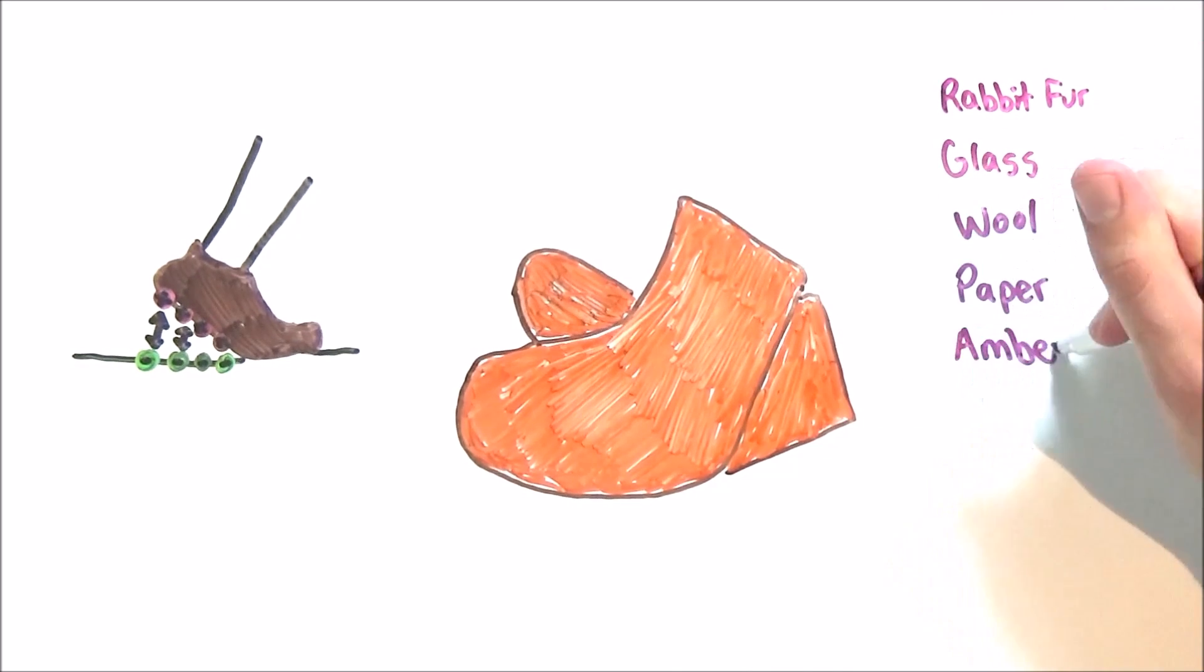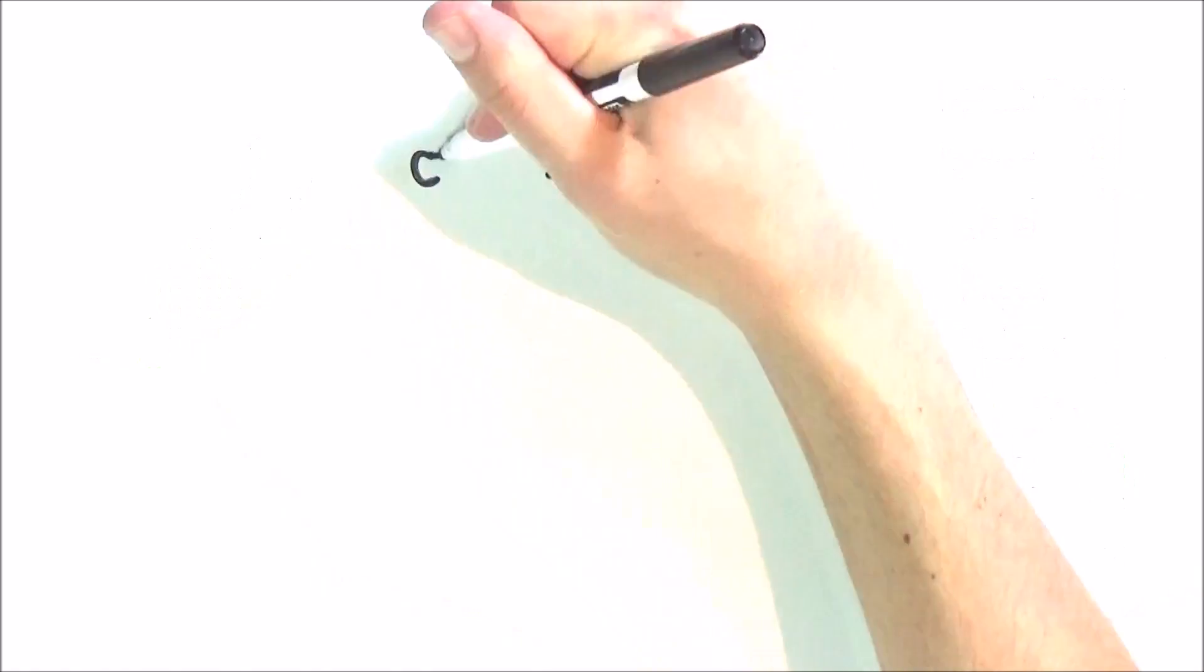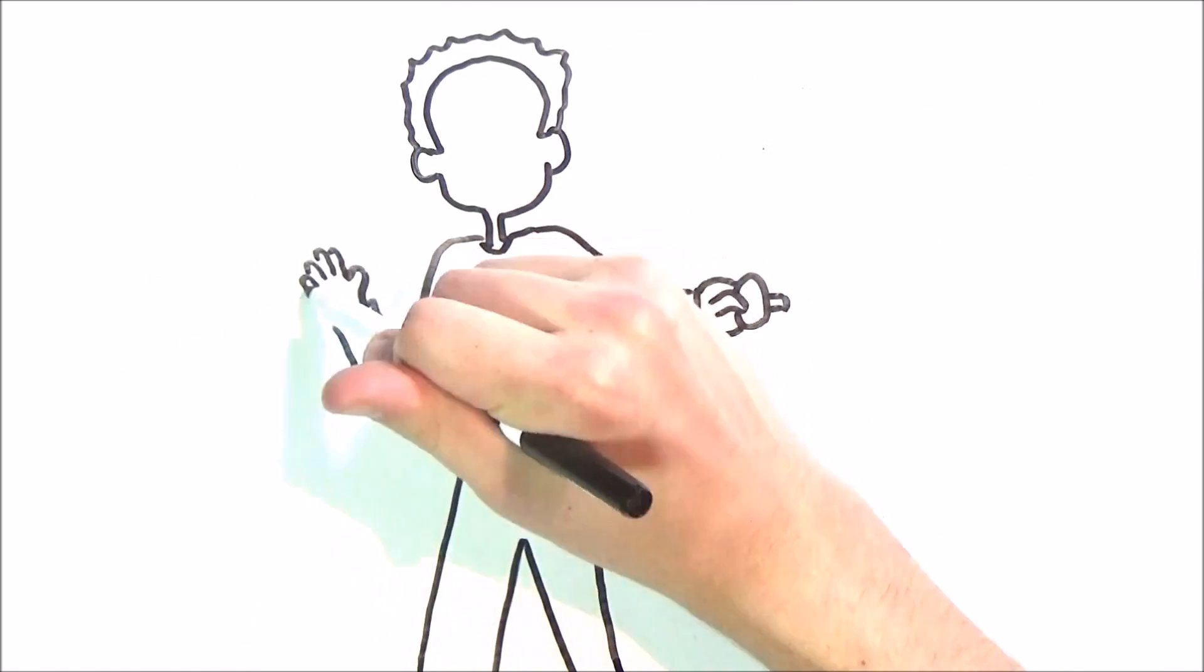Triboelectric series charts show materials that tend to give up more electrons on top and materials that tend to take electrons on the bottom. Once you give up some electrons, which have a negative charge, to the floor material, you're positively charged.